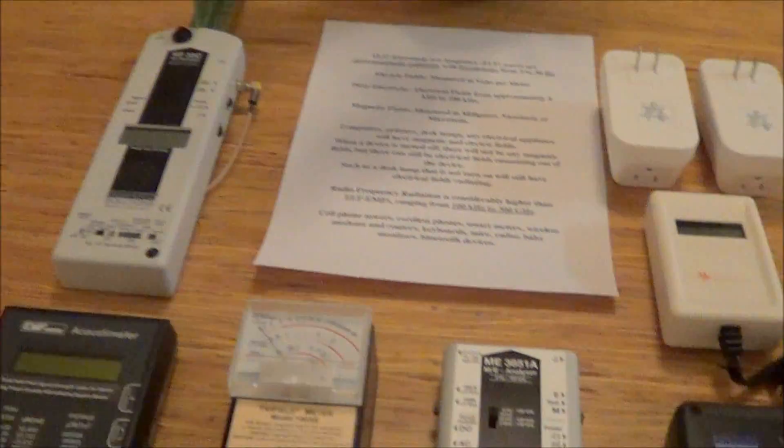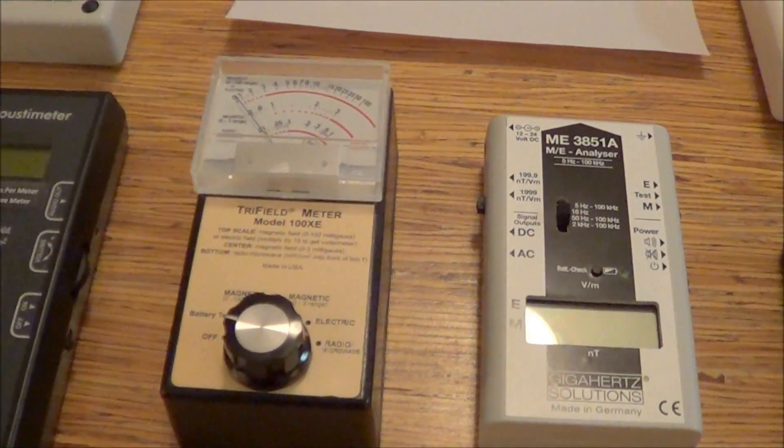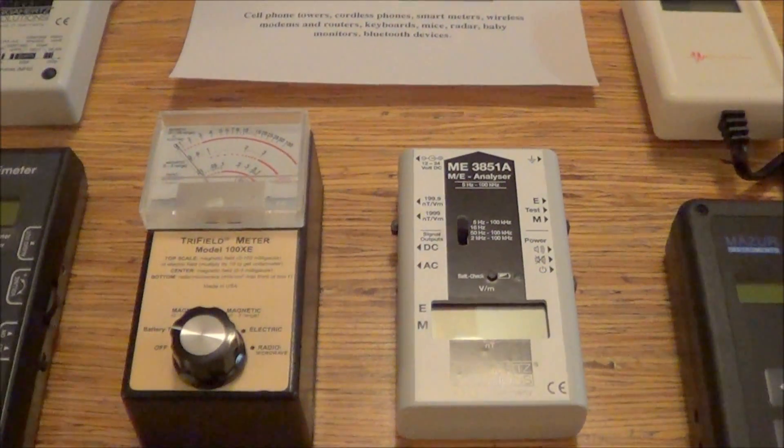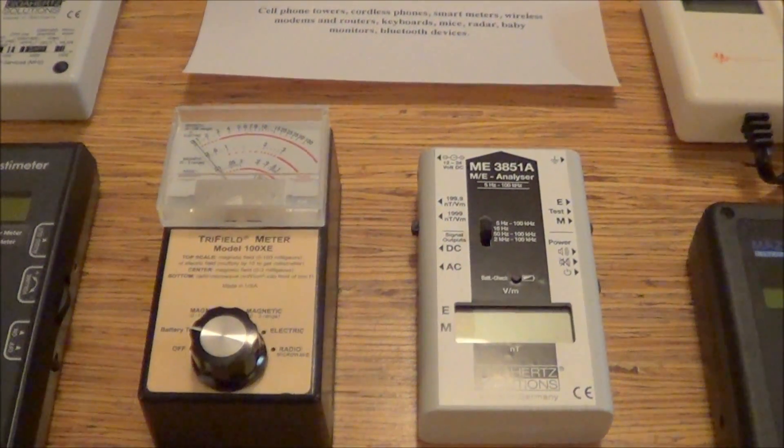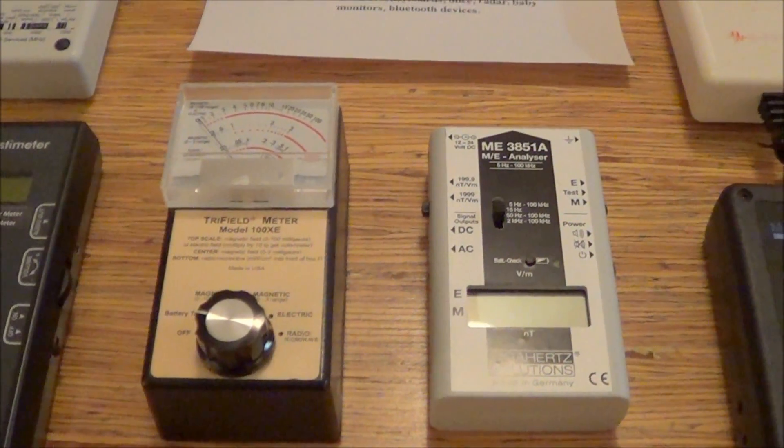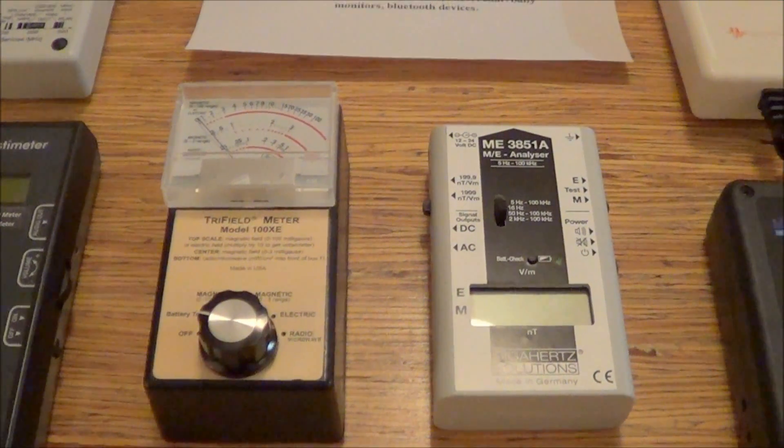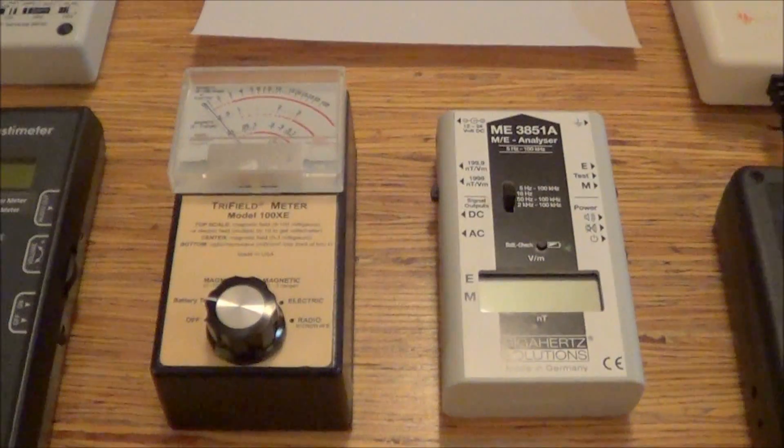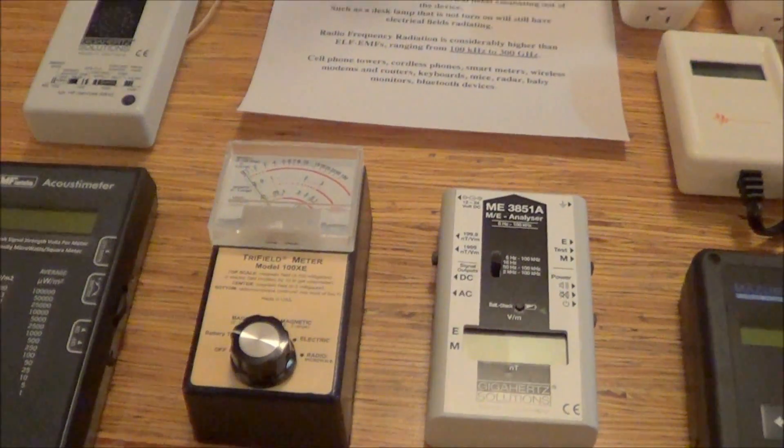So, one would use a gauss meter or a magnetic and electric meter for, again, measuring the fields, the electric or magnetic fields that are coming off of a desk lamp or a computer or a refrigerator or the breaker box. If one's sleeping too close to a breaker box, you can see what electric and magnetic fields are coming out of it.